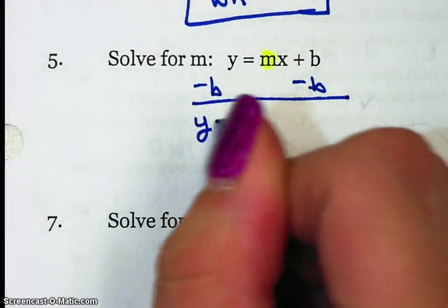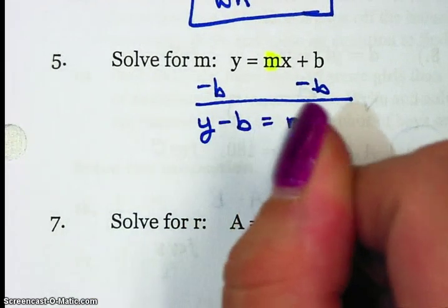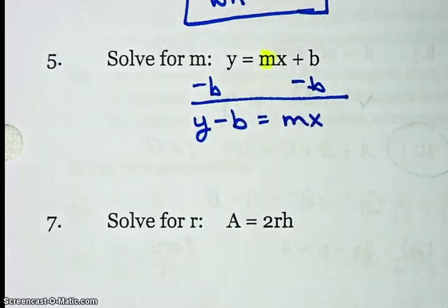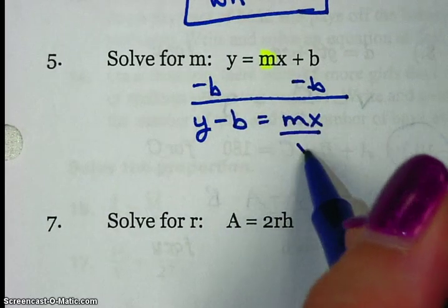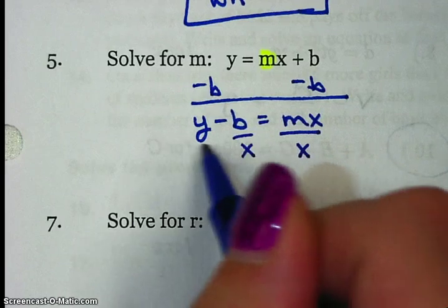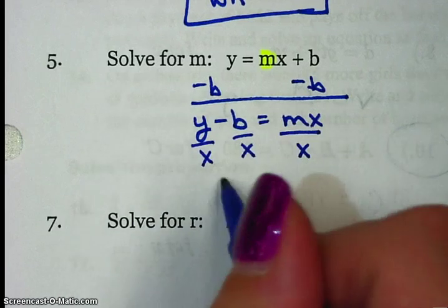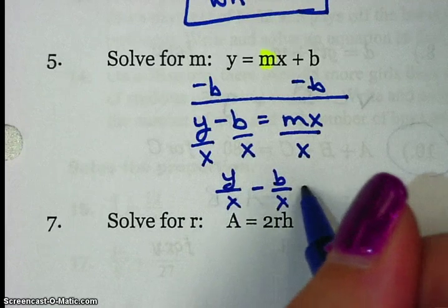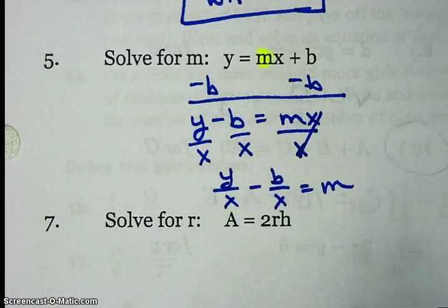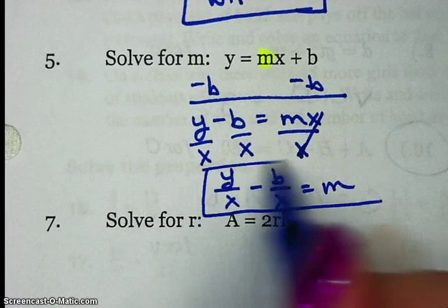So Y minus B equals M, X. Now I have to solve for this M, so I have to undo multiplying by dividing. So Y over X minus B over X equals M. I solve for M, and I'm done.